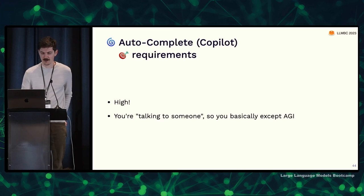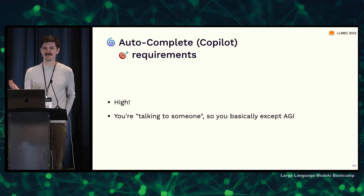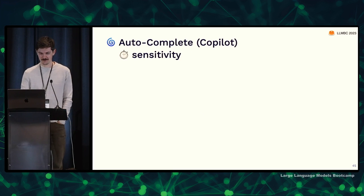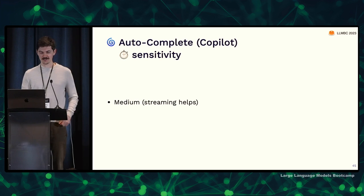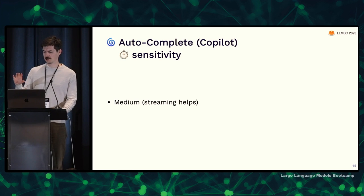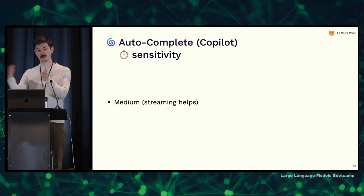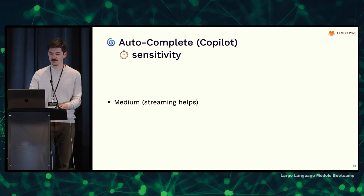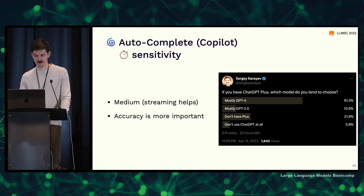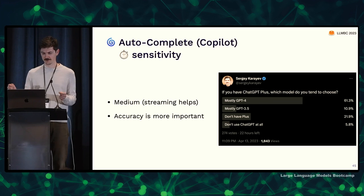The accuracy requirements are high because it feels like you're talking to someone, and you basically expect artificial general intelligence. The latency sensitivity is medium — it's streaming the response, and if your reading speed is slower than the streaming speed, that's great. Accuracy is more important than latency; people are willing to wait longer for a better answer. I did a Twitter poll: with ChatGPT Plus, most people who pay extra just use GPT-4 most of the time.